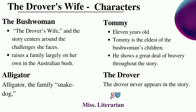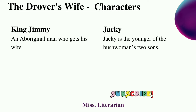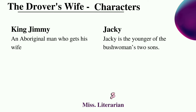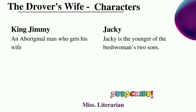Next is the drover. This character never appears in the story, but his existence shapes much of the action. The main character, the bush woman, is the wife of the drover. King Jimmy is an Aboriginal man — Aboriginal meaning one who is an inhabitant of a land from the earliest times, otherwise called indigenous or a native man. His wife is Black Mary. The minor character is Jackie, who is the younger of the bush woman's two sons.